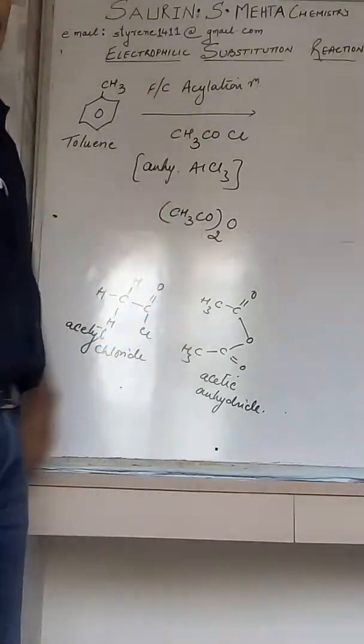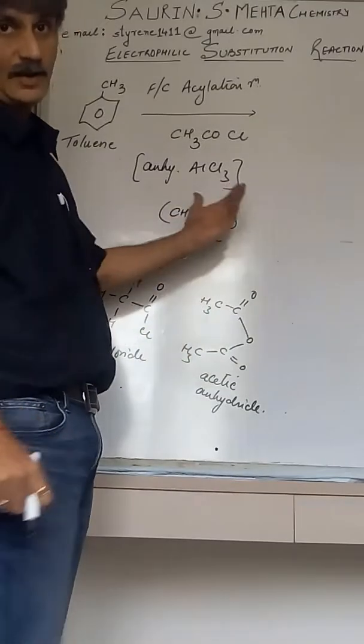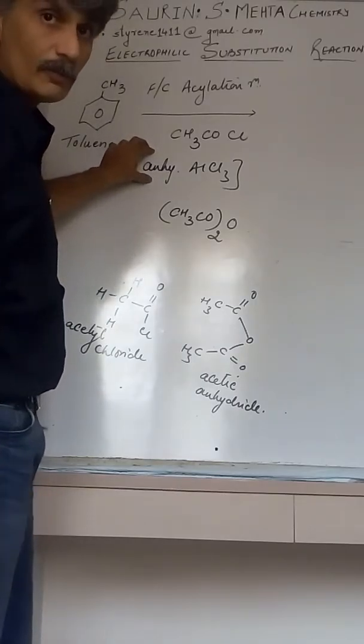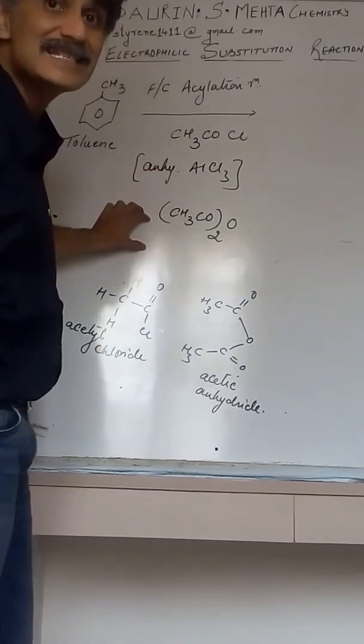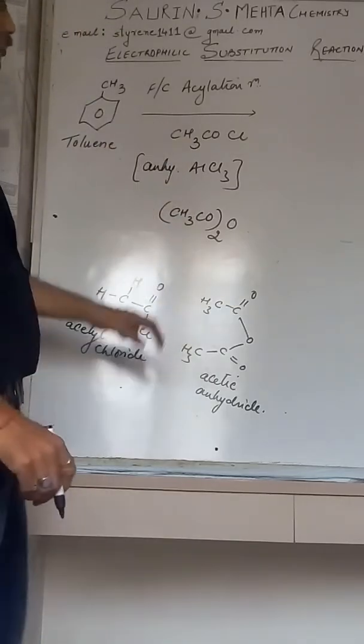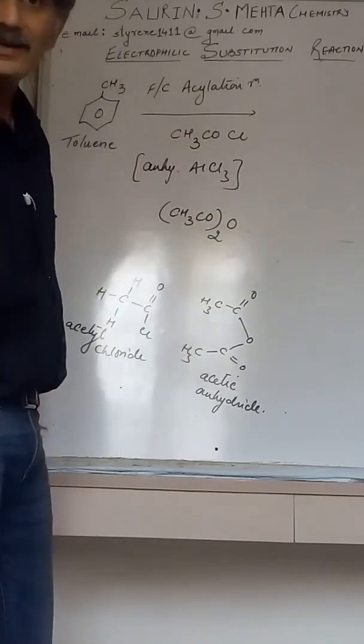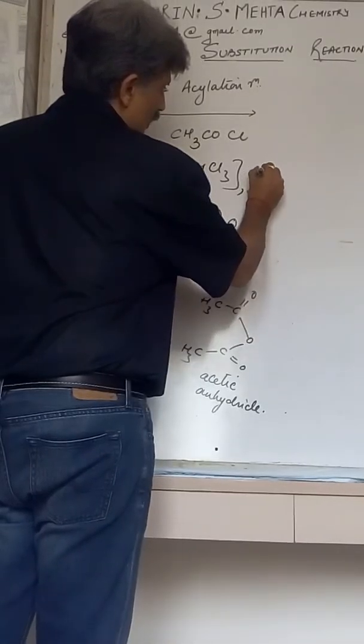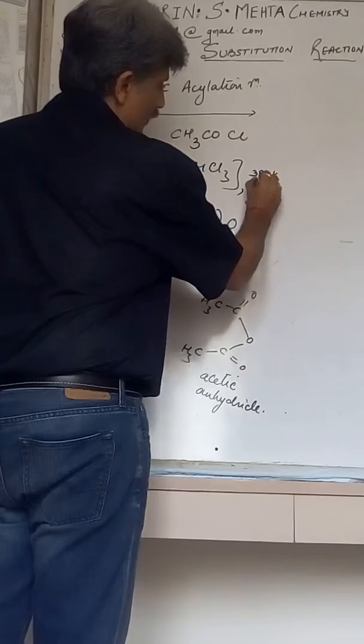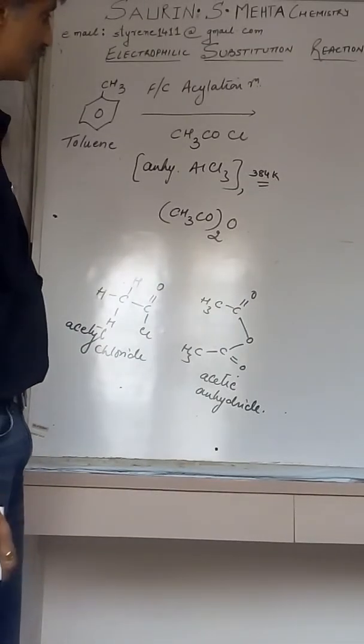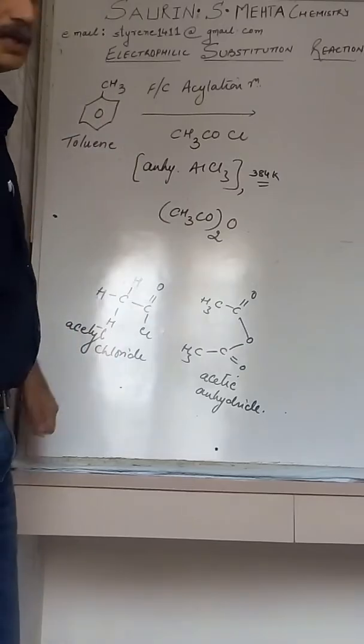In presence of anhydrous aluminum chloride as a catalyst. Because of anhydrous AlCl3 we can say that the reaction is Friedel-Craft reaction. We will take the same reagent in the form of catalyst for acetic anhydride reaction as well. When we take acetyl chloride and perform reaction with anhydrous AlCl3 at 384 Kelvin, that is 111 degrees Celsius, the reaction pertaining to the methyl group will proceed.